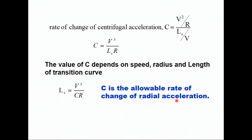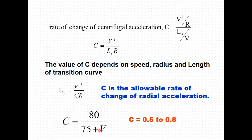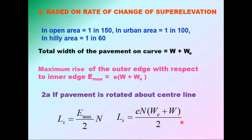The value of C depends upon speed and is given by the equation C = 80 / (75 + v). IRC suggests that for a comfortable ride, C should be between 0.5 and 0.8. The second criterion is based on the rate of change of super elevation.